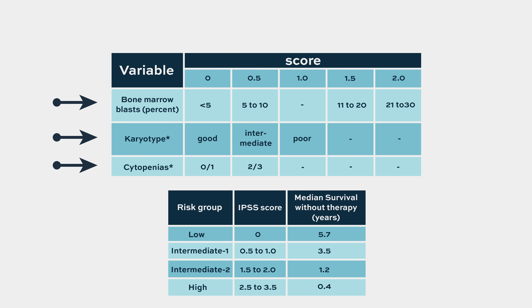Based on that scoring system, low risk is when there are not many blasts in the bone marrow and the chromosomal abnormalities are not complex.